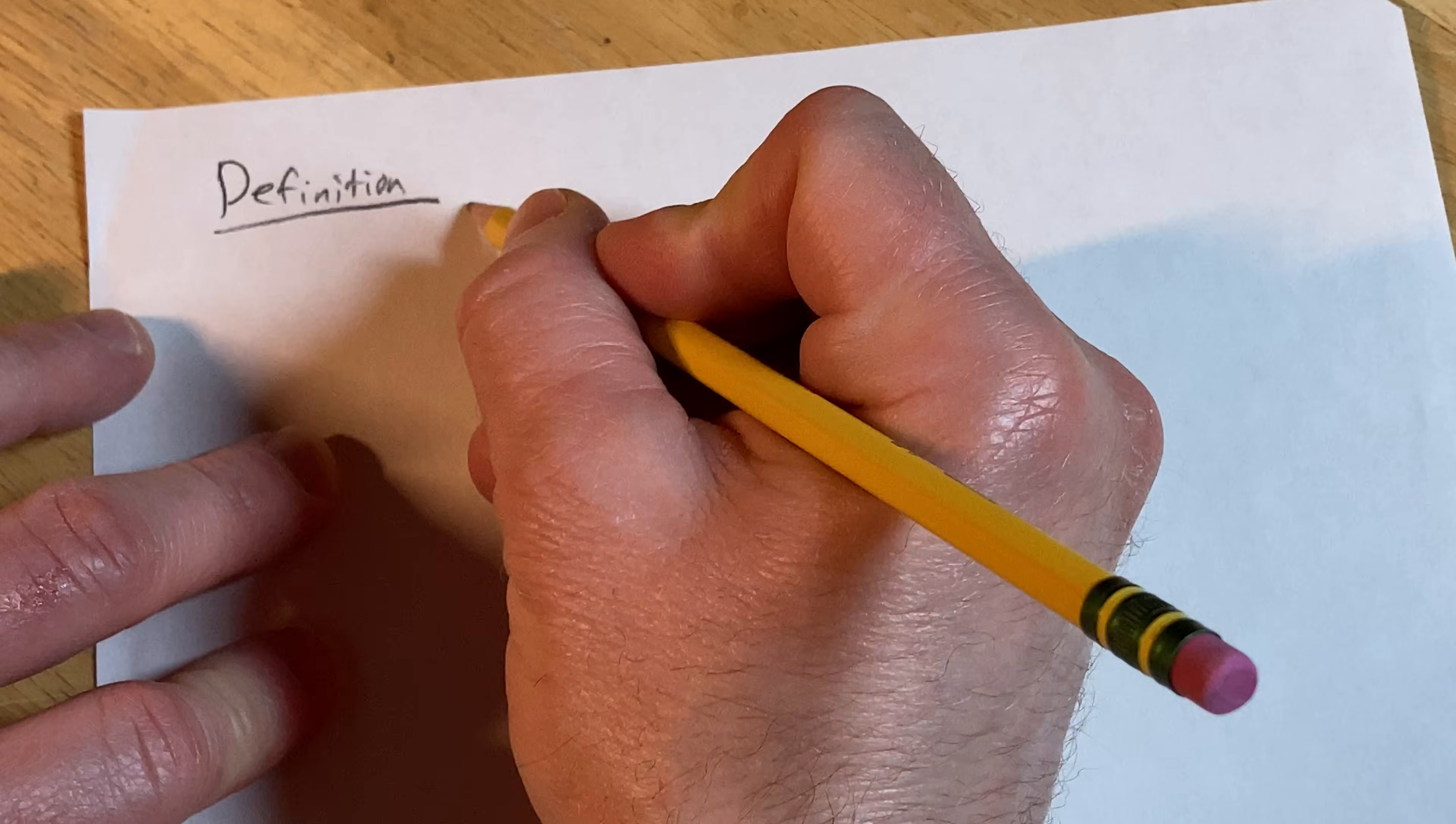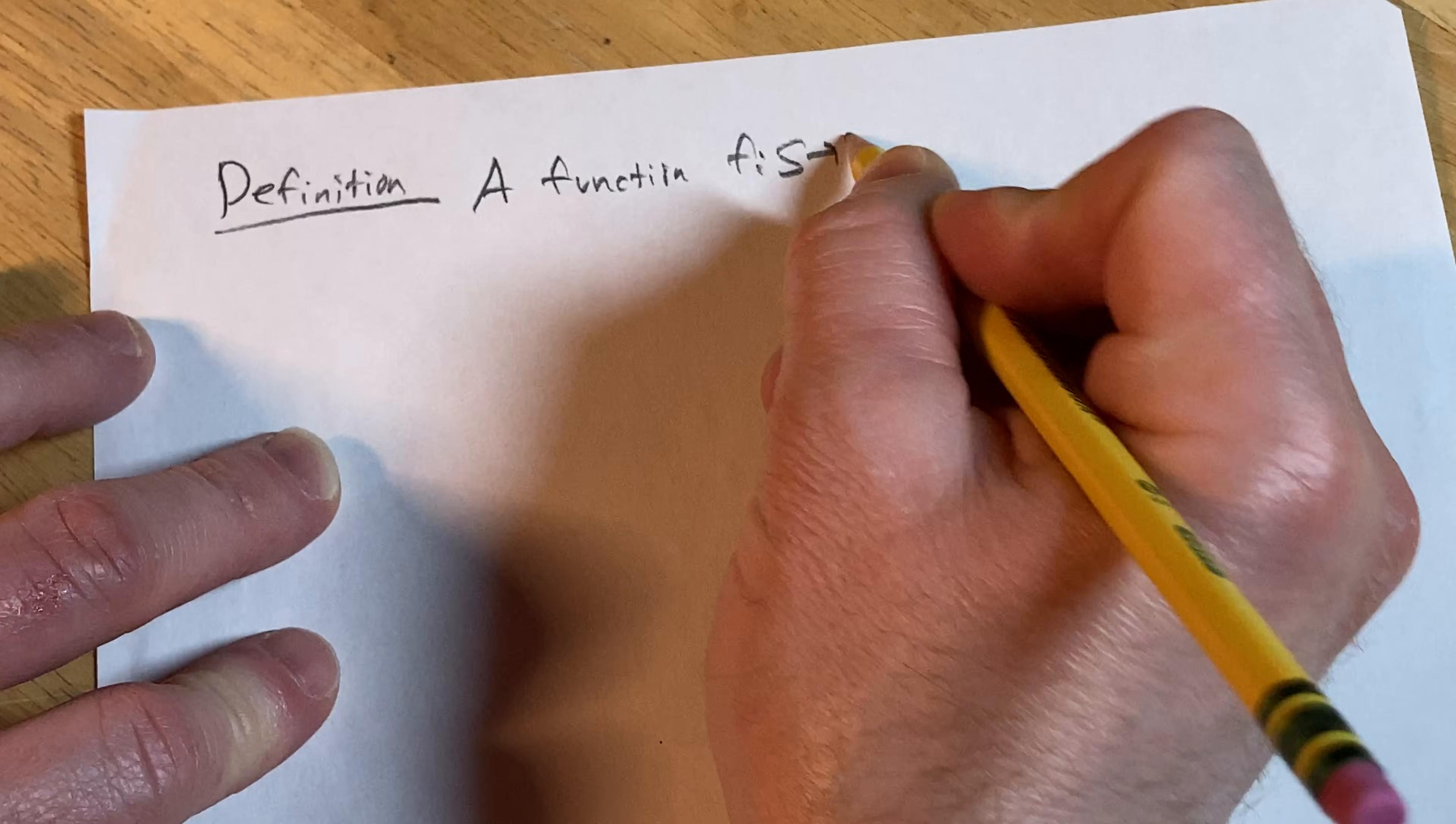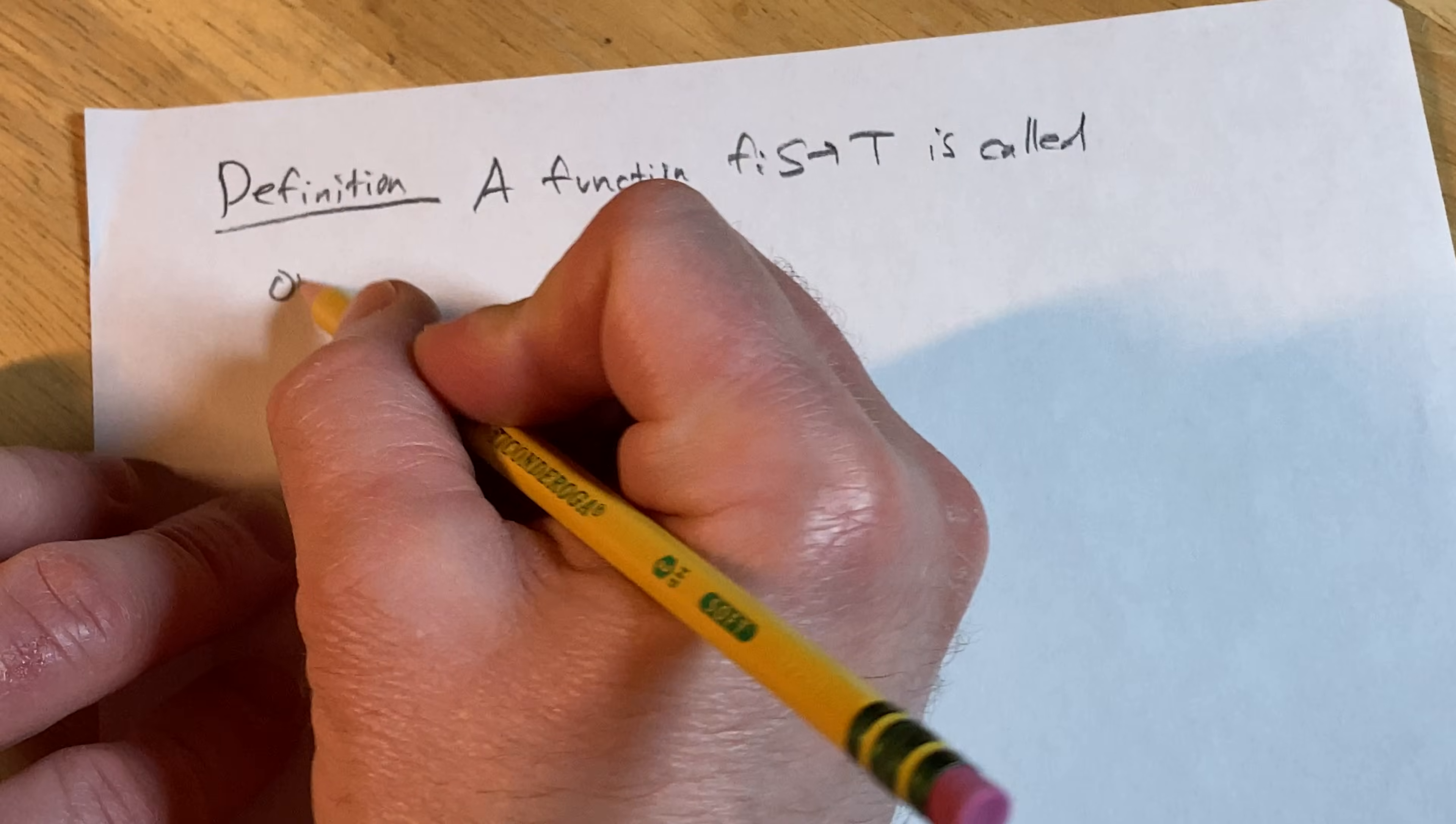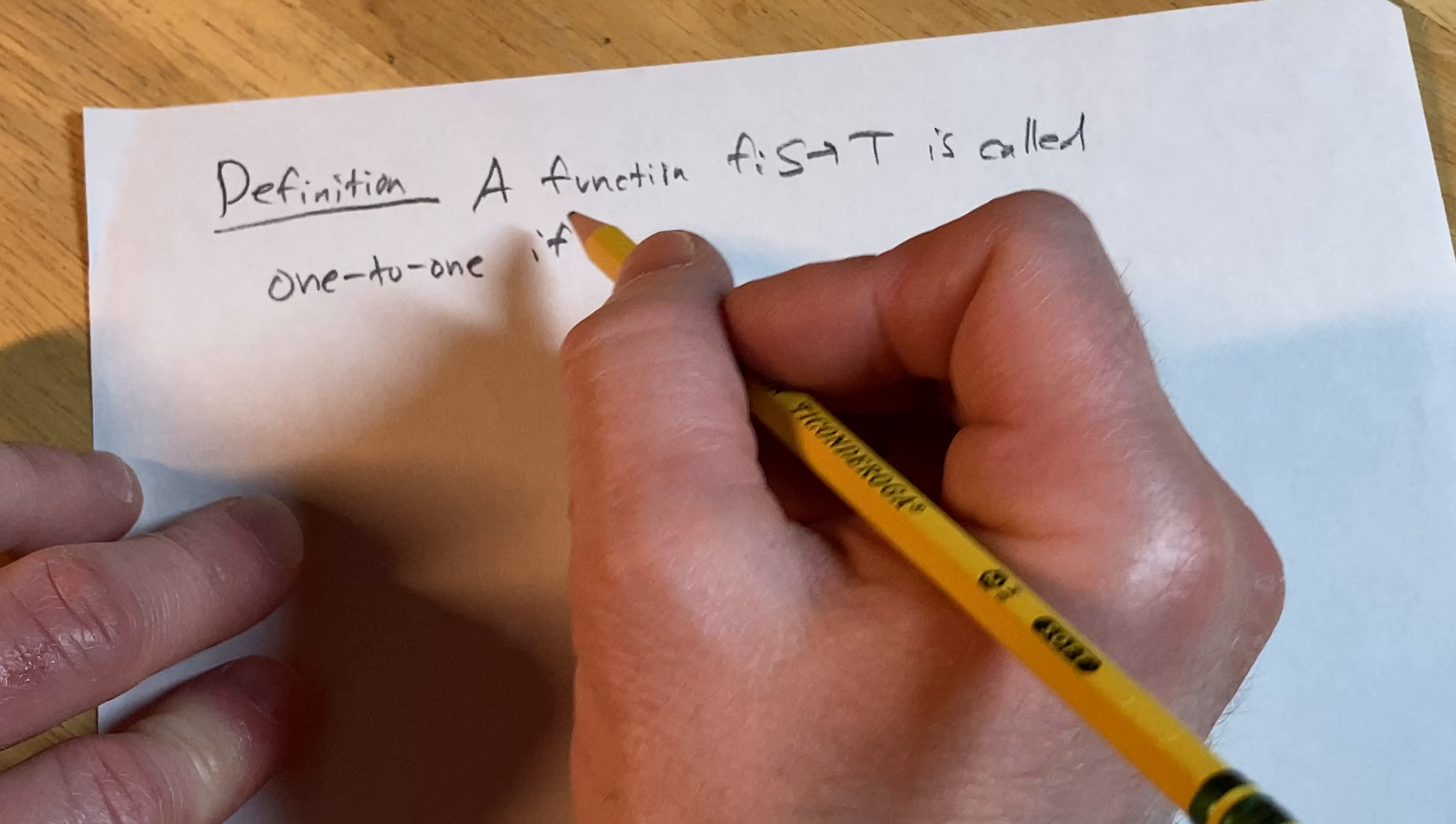A function f from S to T is called one-to-one if the following is true: